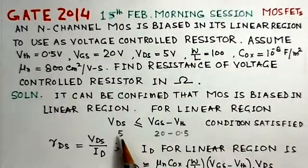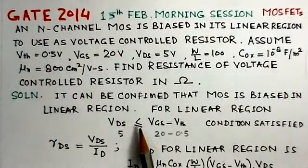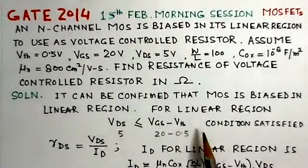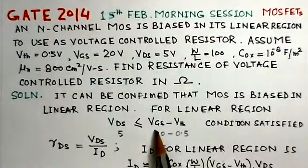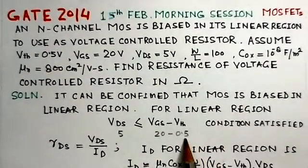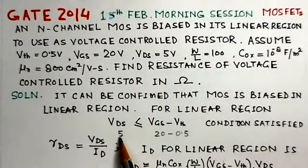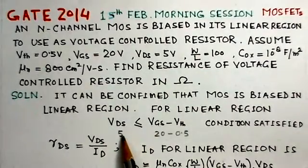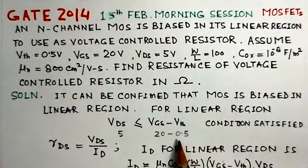For the linear region, the condition is VDS should be less than or equal to VGS minus Vth. VDS is 5 volts, VGS is 20 volts, and Vth is 0.5 volts. So the right-hand side is 20 - 0.5 = 19.5 volts, and the left-hand side is 5 volts. This condition is definitely satisfied, so it is in the linear region.